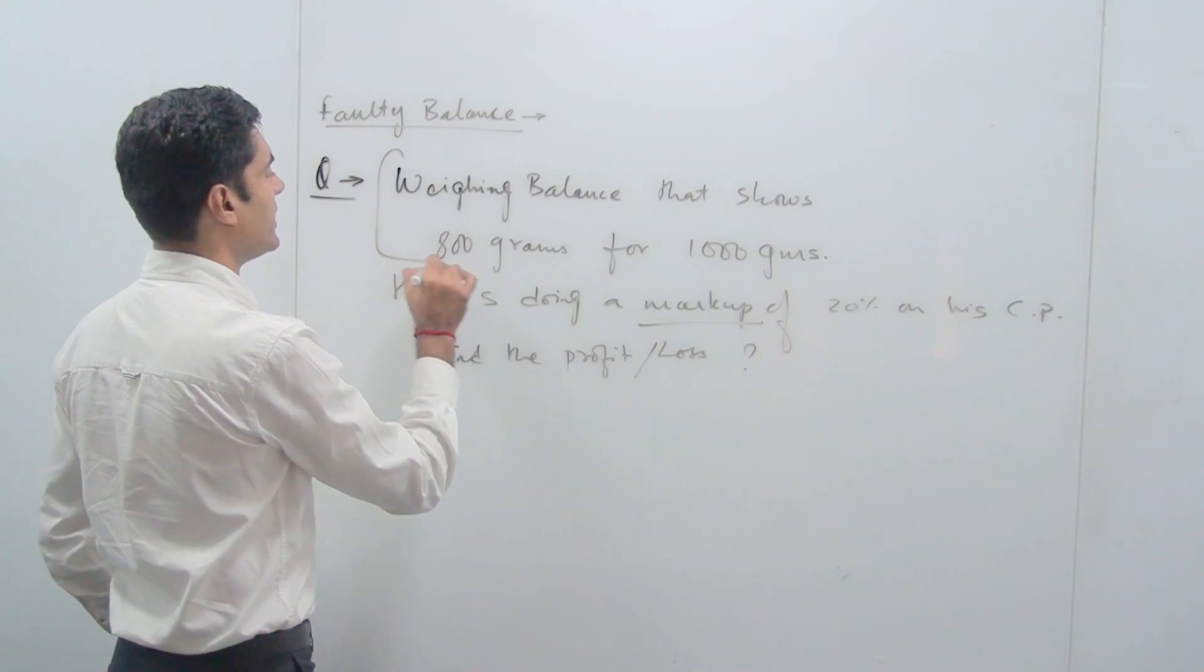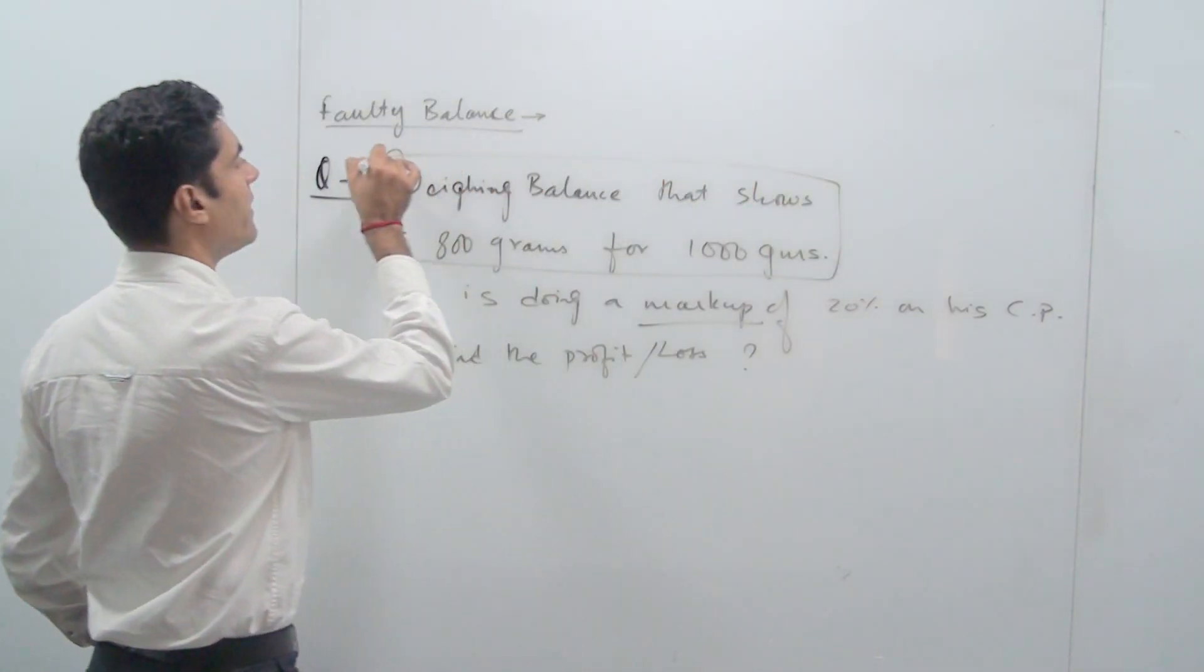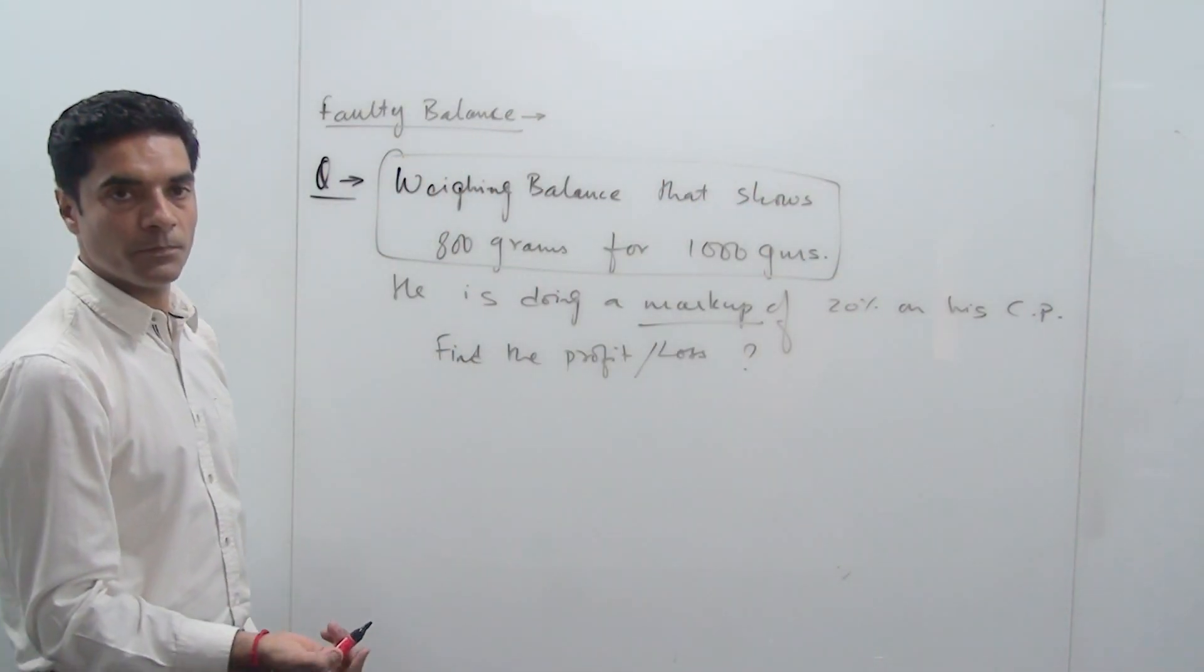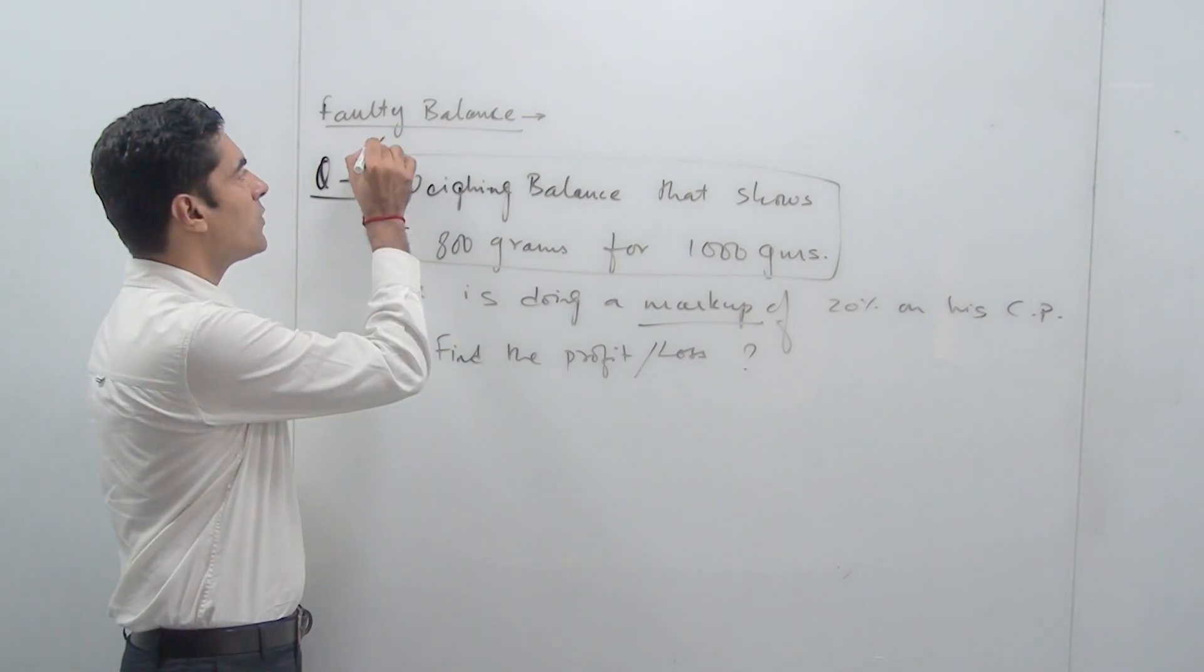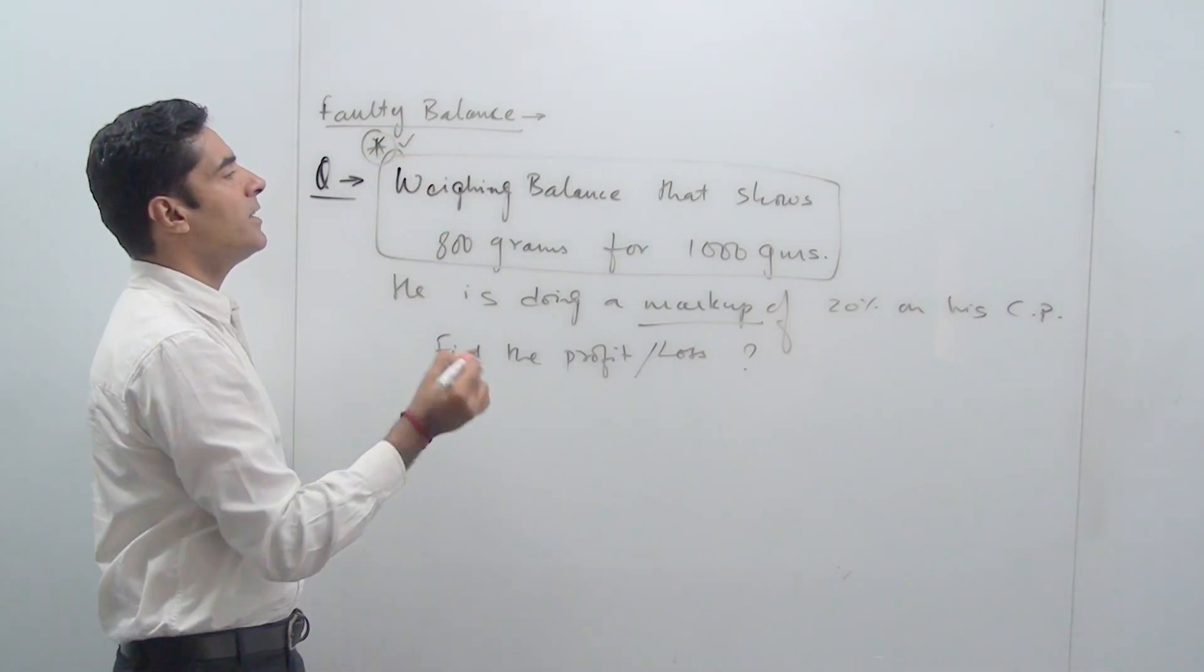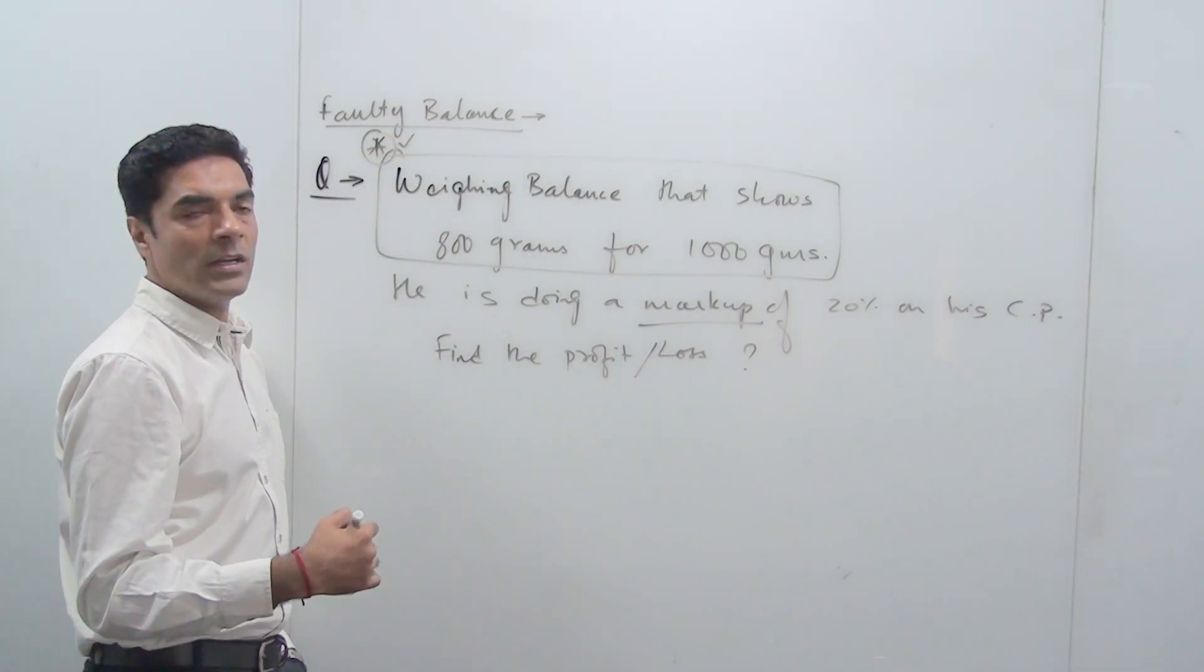So if I read these first two lines, shopkeeper is having a weighing balance that shows 800 for 1000. So you need to first of all conclude whether from here the shopkeeper is having profit or loss.